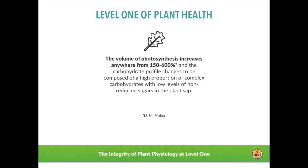In addition to increased photosynthetic volume, we also observe an increase in photosynthetic quality — a shift in the carbohydrate profile. These shifts are not fixed; carbohydrate profiles can vary quite substantially, as we can observe through forage analysis. One place we can observe this is through the effects of genetic modification — an unintended consequence being a shifted amino acid profile and carbohydrate profile present in genetically modified crops versus non-genetically modified crops.